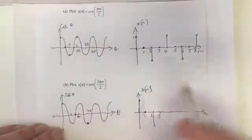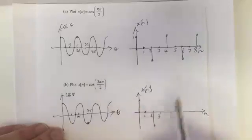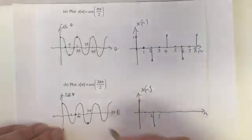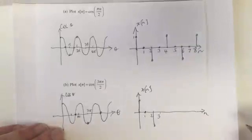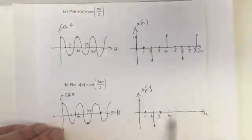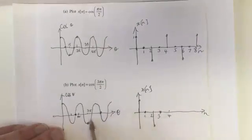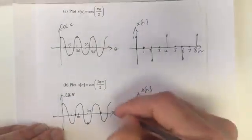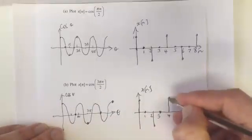What about n equals 3? We've got cos(9π/2), and cos(9π/2) is here, equal to 0. What about 4? We have cos(12π/2), which is cos(6π). Cos(6π) is up here, cos(6π) is plus 1, and it repeats.